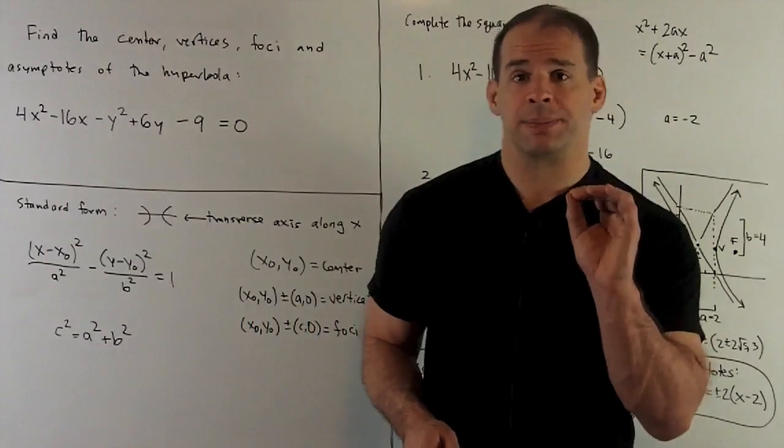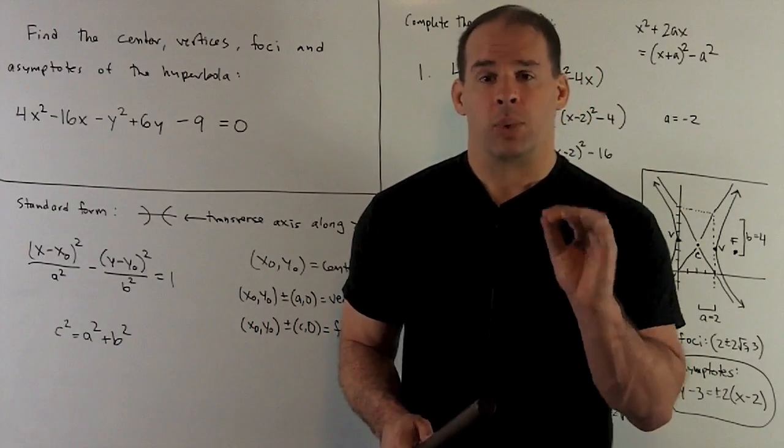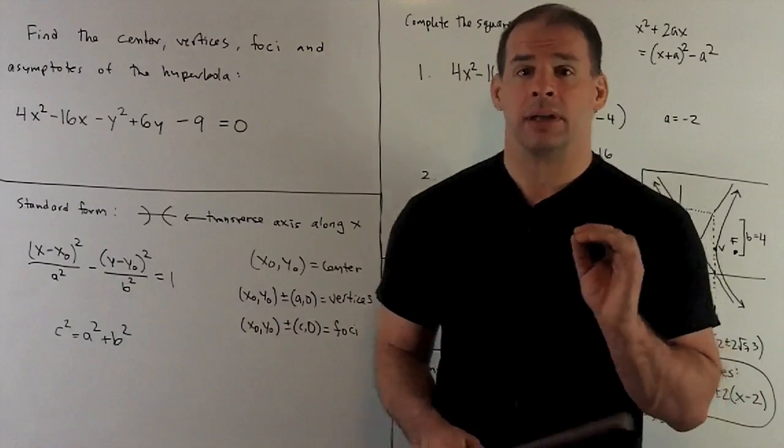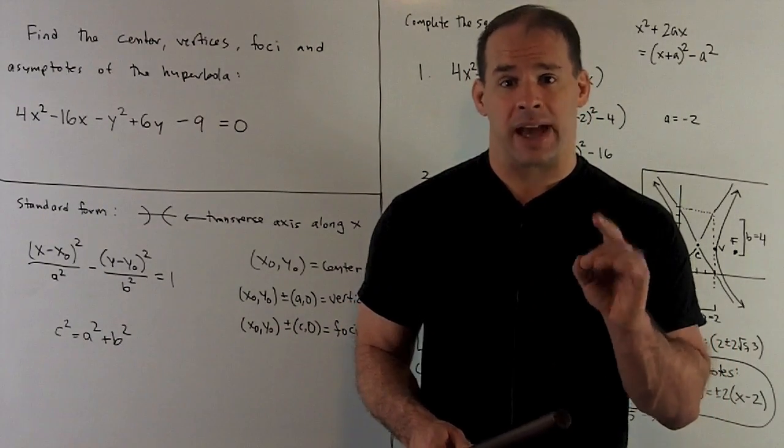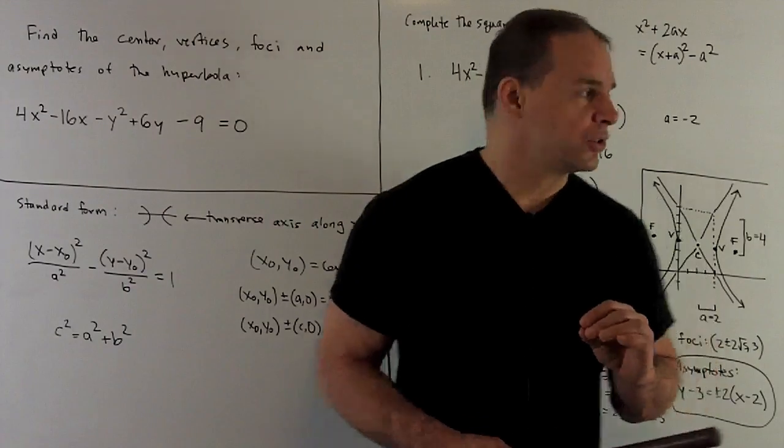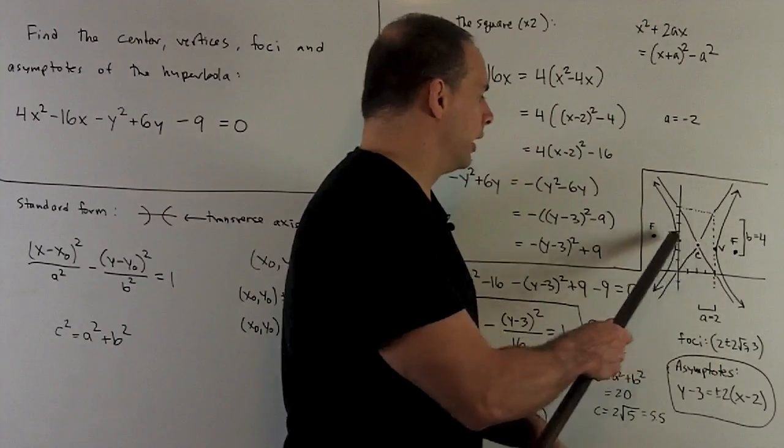Then for the vertices, we're going to take the center, we're going to take a, and then we're just going to add ±a to the x value of our center. So that will give us these points here and here.